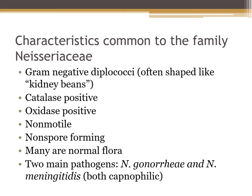Both of these organisms are capnophilic and require CO2. The non-pathogens macroscopically look small and dry, yellow and wrinkled, while the pathogens — Neisseria gonorrhoeae and Neisseria meningitidis — can look tannish or greenish and they can often be kind of damp looking.